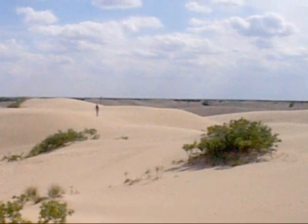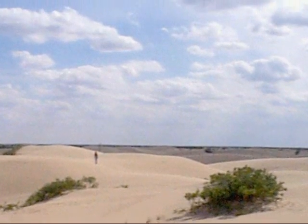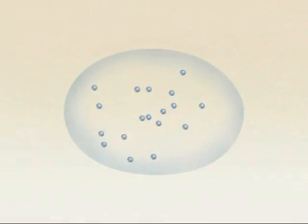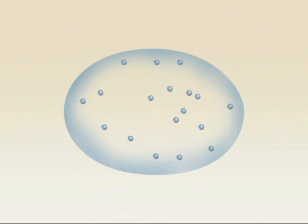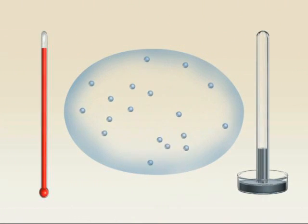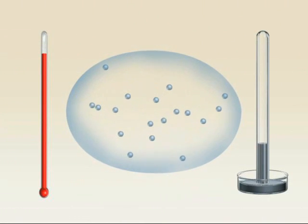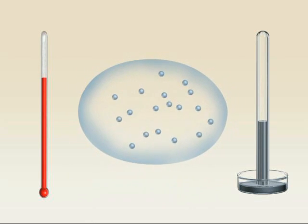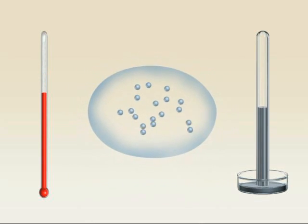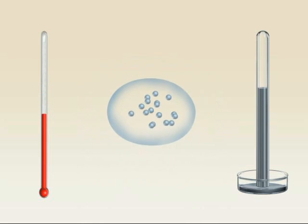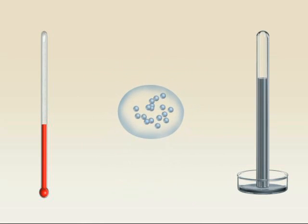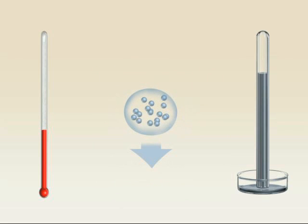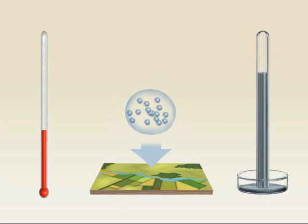Atmospheric pressure also varies according to temperature. Air is composed of molecules of gas that are always moving. The colder the air, the more slowly its molecules move, so they tend to be closer together. The air contracts and becomes denser, and therefore heavier. The force that air exerts on a given surface increases. In other words, atmospheric pressure rises.